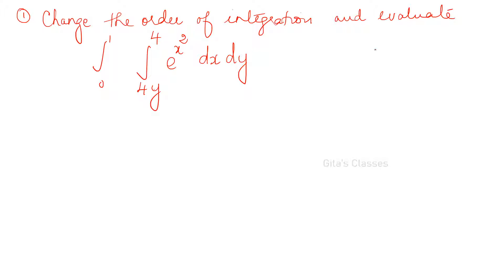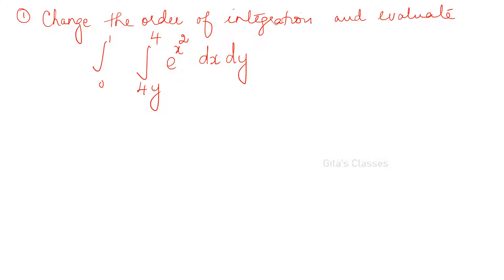So the order is dy dx. Sometimes to confuse you they will give dy dx — then you should be able to correct it. If you have variables in the inner limit, please check whether the given order is correct or not. Why do we need to change the order of integration? Why don't we integrate directly? Because the given integration is sometimes difficult. For e^(x²), it will be very tedious to integrate with respect to x. If it is with respect to y then it will be easy. We change the order only for our convenience to make the integration simple.